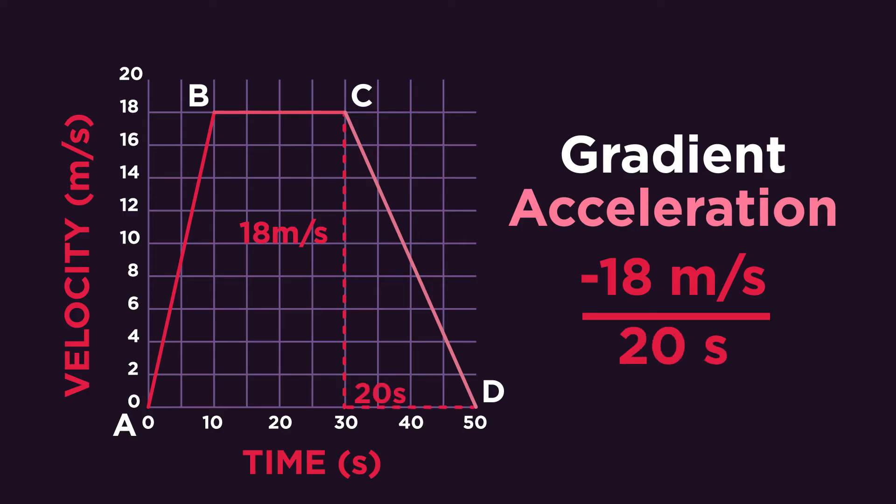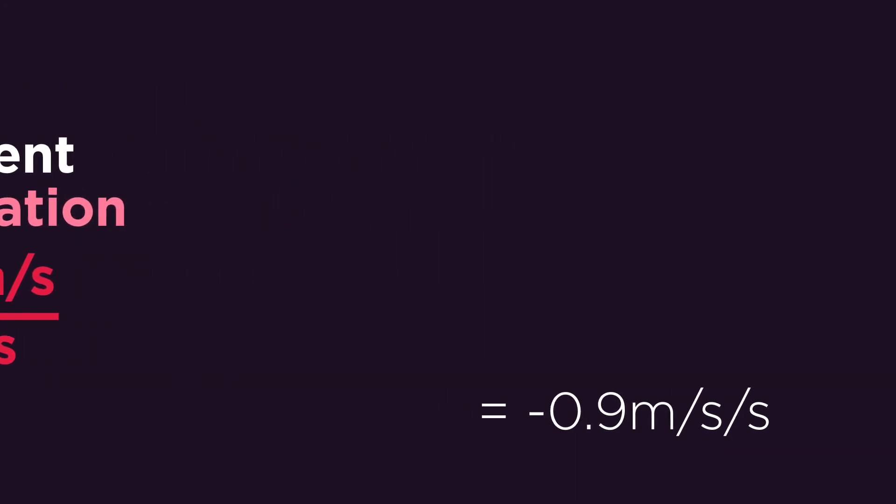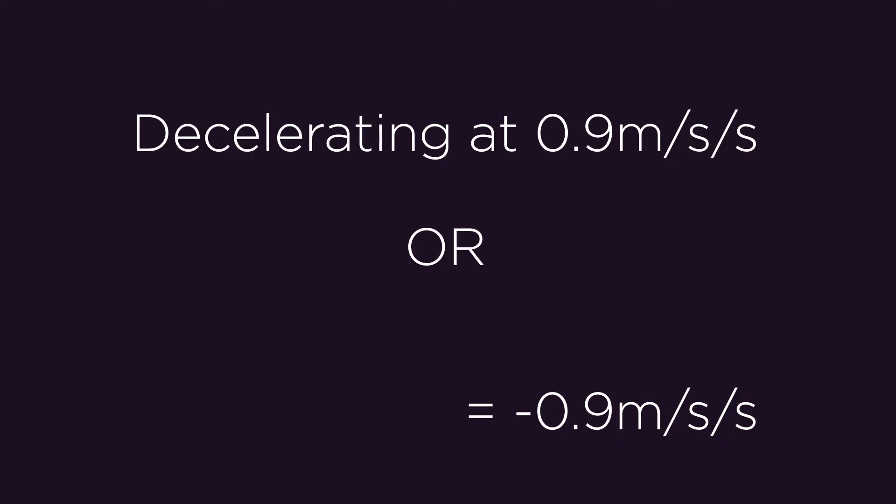So negative 18 divided by 20 equals negative 0.9 meters per second per second. We can either say the acceleration is negative 0.9 meters per second per second, or that it's decelerating at 0.9 meters per second, removing the negative.